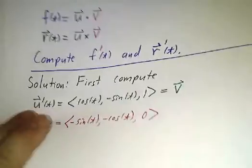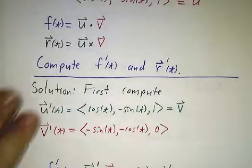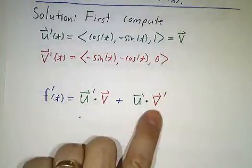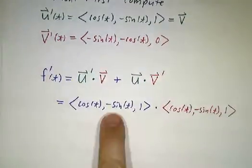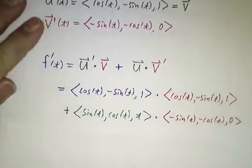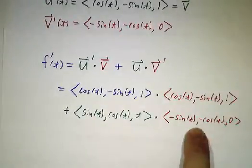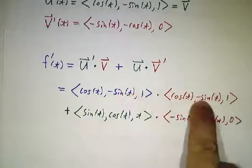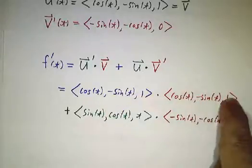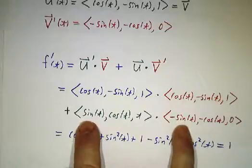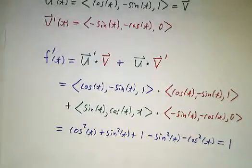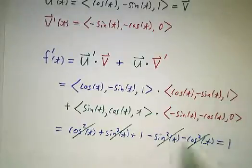To take the derivative of u·v, we compute u′·v + u·v′. Substituting in: cosine times cosine gives cosine squared; sine times sine gives sine squared; minus sine times minus sine gives sine squared; and 1 times 1 gives 1. Then we subtract sine squared and cosine squared. The cosine squareds cancel, the sine squareds cancel, and it all boils down to 1. The derivative of the dot product is 1.